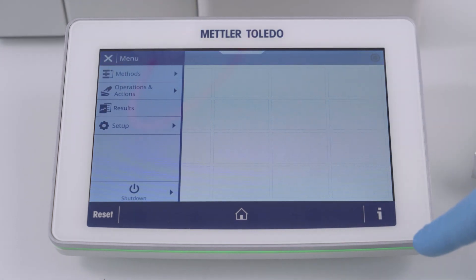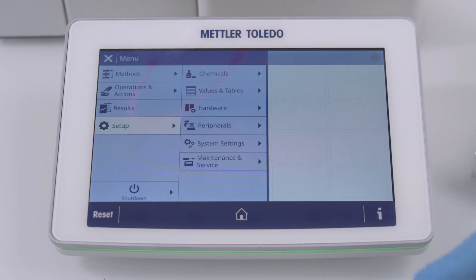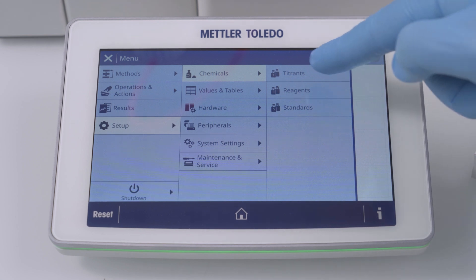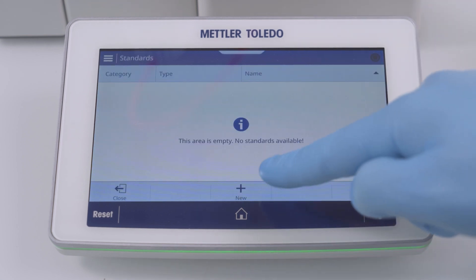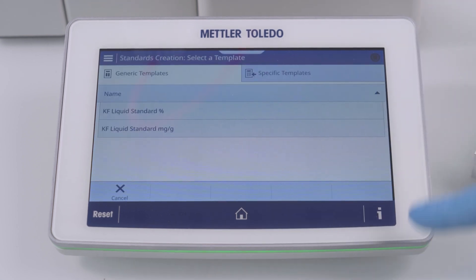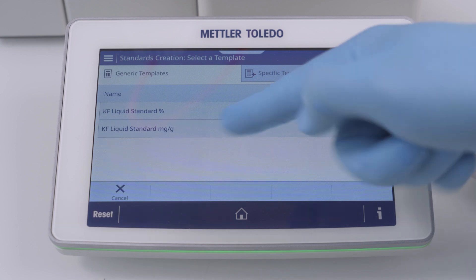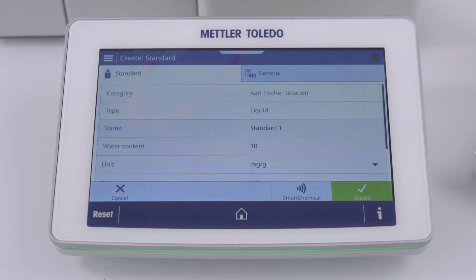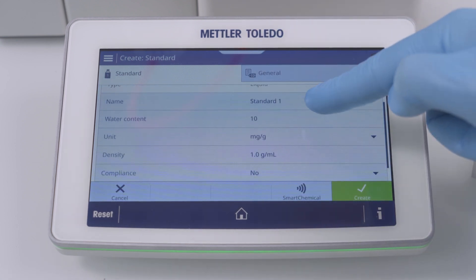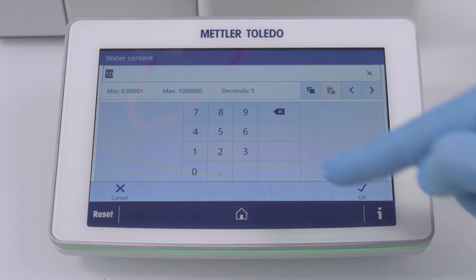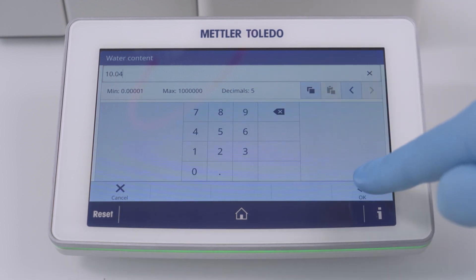To create the KF standard, open the main menu, choose setup, chemicals, standard and click on new standard. In this example, we define the standard value in milligram per gram. So let's choose this option. Then we adjust the standard concentration to the actual value written in the standard certificate and click on create to finish the standard setup.